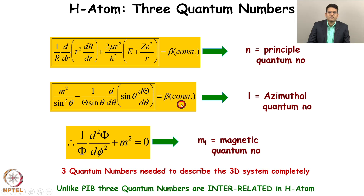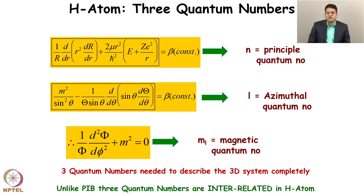The first equation is for phi — when we solve it we get the magnetic quantum number. The second one contains theta — solving it gives the azimuthal quantum number. The third one contains r — solving it gives the principal quantum number. So three quantum numbers are necessary to describe a 3D system completely. But how this differs from other 3D systems, particularly a three-dimensional box, is that n, l, and m are related to each other.